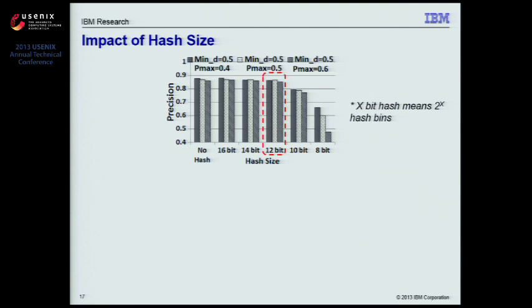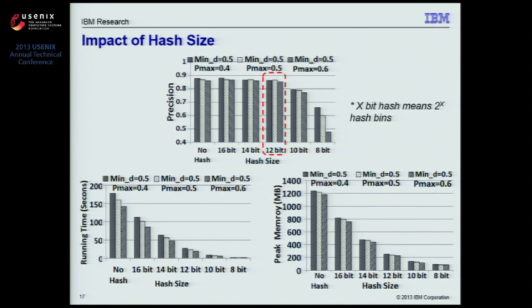So a larger hash size might seem more preferable for accuracy. However, looking at the figures measuring hash size versus running time and peak memory usage, a small hash size is very effective in reducing computation and storage overhead. Overall, using 12 hash bits strikes a good balance — it reduces memory usage and running time by 80% while keeping accuracy almost intact. This figure also shows that the hashing trick will become more and more important as the number of malware grows, because without it, memory usage will quickly become prohibitively high for large numbers of malware samples.